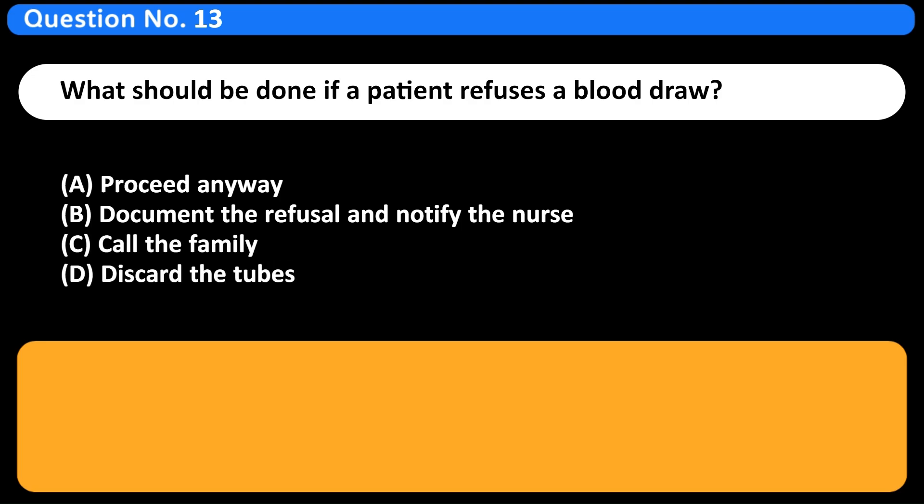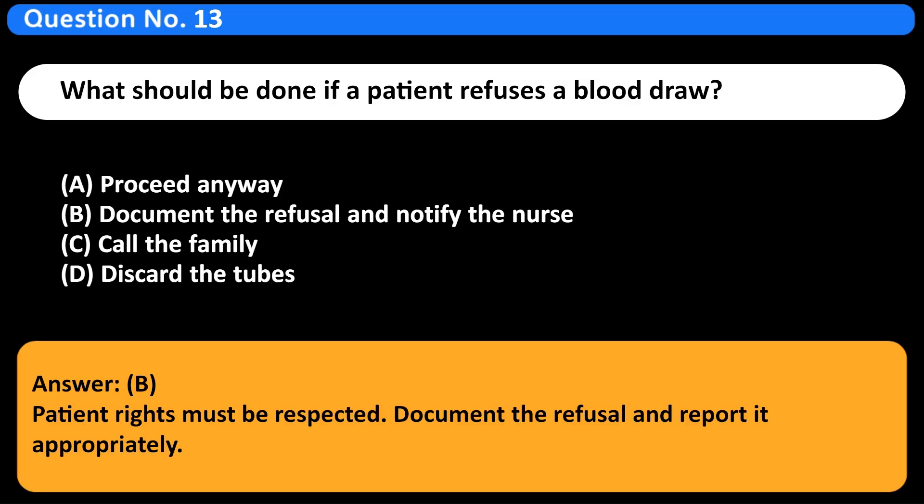What should be done if a patient refuses a blood draw? A. Proceed anyway. B. Document the refusal and notify the nurse. C. Call the family. D. Discard the tubes. Answer B. Patient rights must be respected. Document the refusal and report it appropriately.